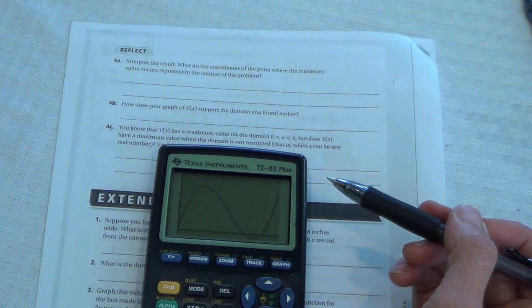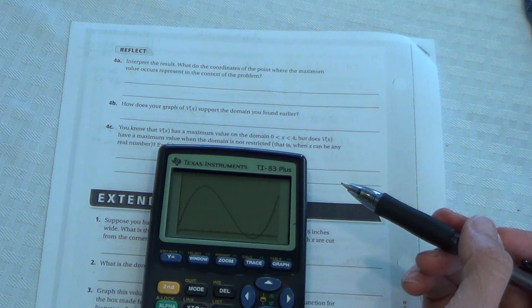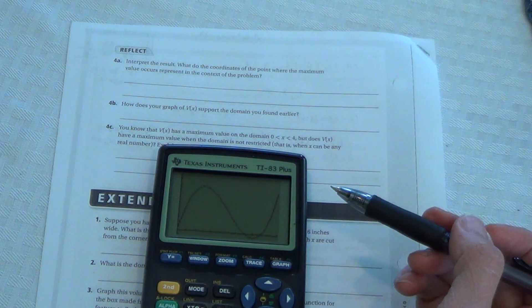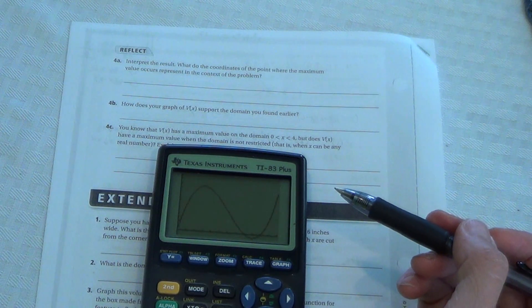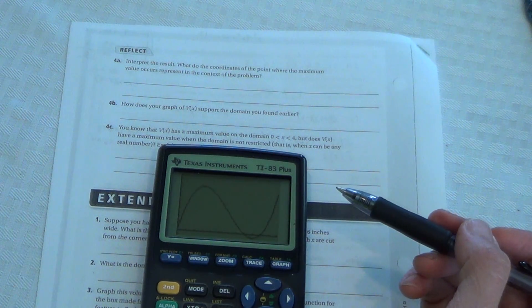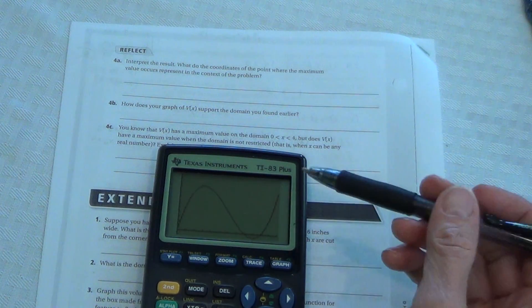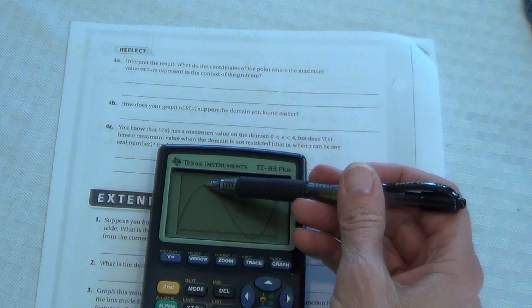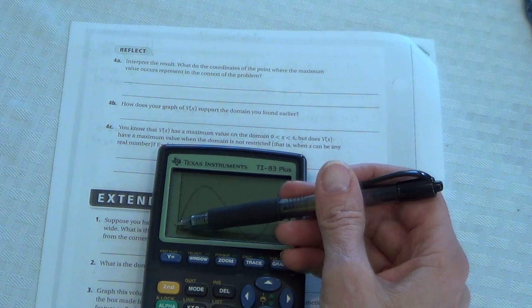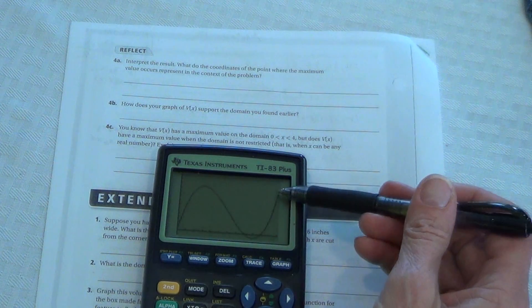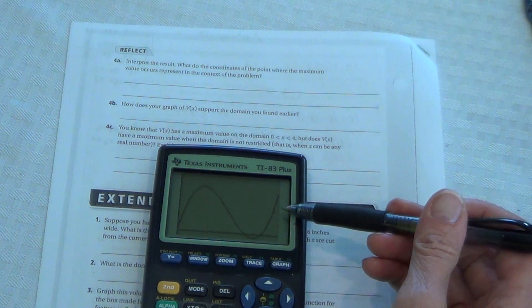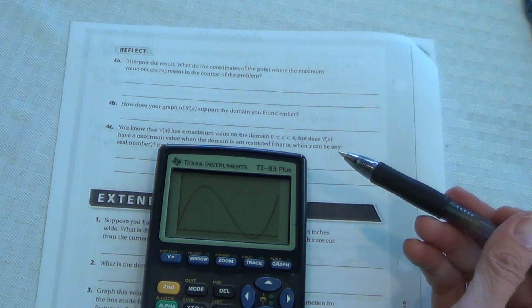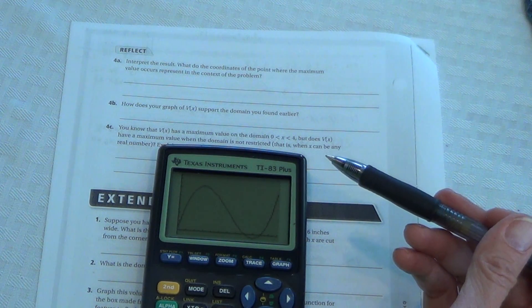Okay. So you explain that in your own words. You know that V of x has a maximum value on the domain 0 is less than x is less than 4. But does V of x have a maximum value when the domain is not restricted? This is a great question. Glad that we graphed this. Because look, when it's restricted there's our maximum. But if we let off those restrictions, do you see where it's going? Remember it's a cubic function. So it's going to infinity without bound. So there would be no maximum then.